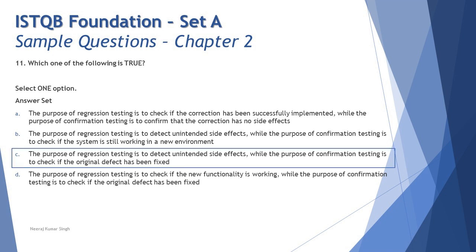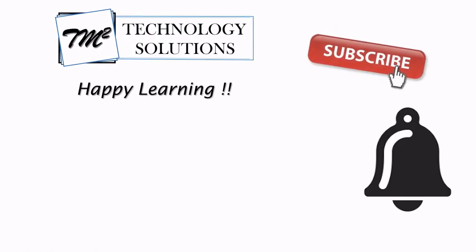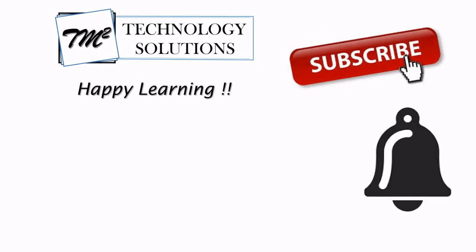The correct answer is C: the purpose of regression testing is to detect unintended side effects, while the purpose of confirmation testing is to check if the original defect has been fixed. We'll hold here and cover the remaining two questions from Chapter 2 in the next tutorial. Feel free to comment below with any queries — I'm always happy to answer. Take care and happy learning!